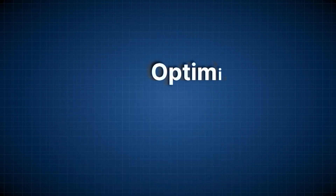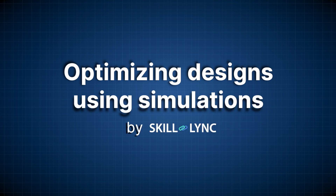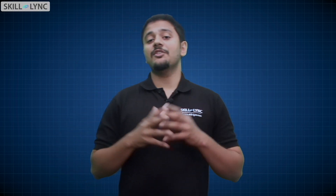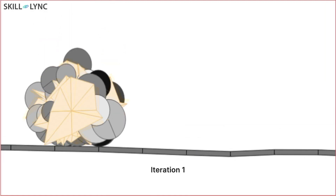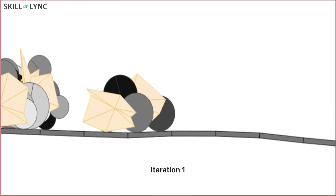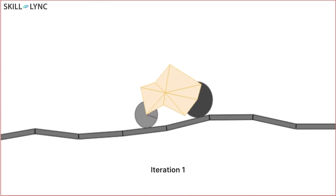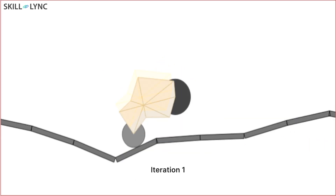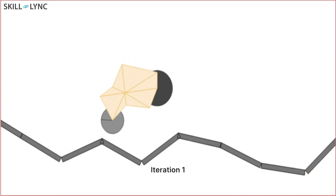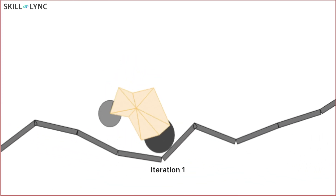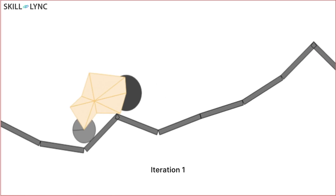Here is an example to help you understand. In this video here you can see a simulation program using genetic algorithm. The program forms cars using simple polygonal shapes and then runs them over a simulated landscape to see how far the designs are able to travel before they get stuck or toppled over.